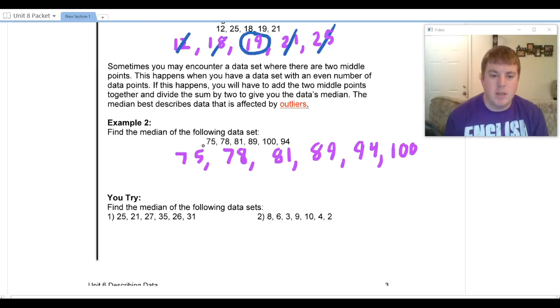Again, I'm going to cross off numbers from each side. I'm going to cross off one from the left, one from the right, one from the left, one from the right. And you'll notice this time I'm left with two numbers. If I crossed off one from each side, there wouldn't be anything left. I would have to be stuck with these two numbers.